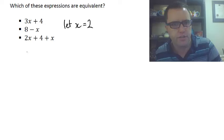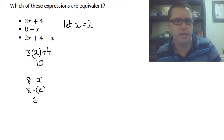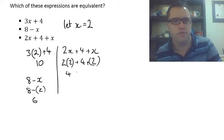So our first expression goes to 3 times 2 plus 4. 6 plus 4 is 10. Our second one here, I'll write it again. 8 minus x. So that gets to 8 minus 2. 8 minus 2 is 6. And our last one here, 2x plus 4 plus x. So we've got 2 times 2 plus 4 plus 2. So that's 4 plus 4 plus 2. 4 and 4 is 8 plus 2 is 10.